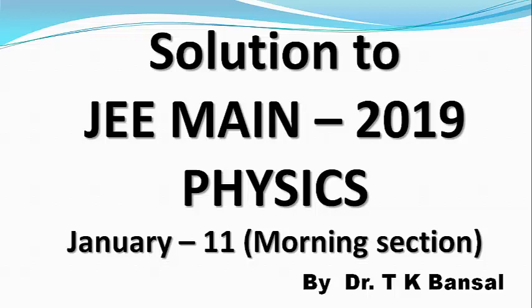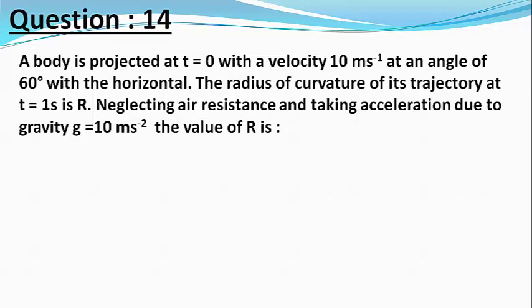Our next question is, a body is projected at t equals 0 with a velocity of 10 meters per second and at an angle of 60 degrees to the horizontal. The radius of curvature of its trajectory at t equals 1 second is R. Neglecting air resistance and taking acceleration due to gravity g equals 10 meter per second square, the value of R is.